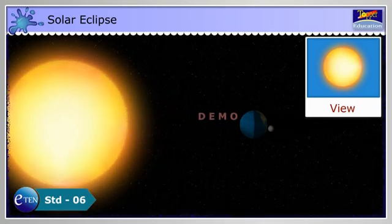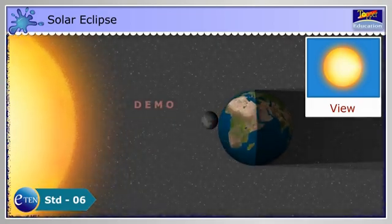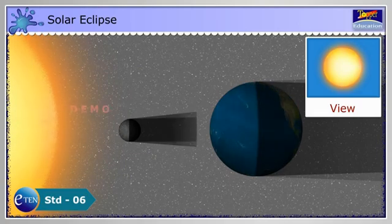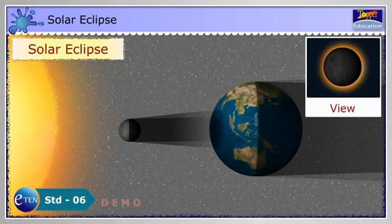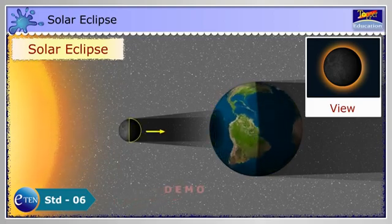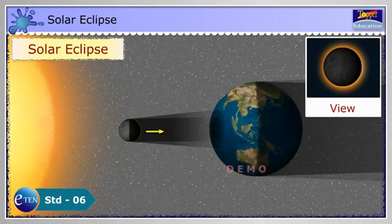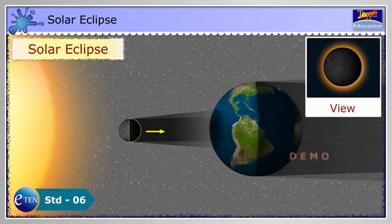In other words, the moon casts its shadow on the earth. This phenomenon is known as solar eclipse. During a solar eclipse, the dark side of the moon is towards us, which happens on a new moon day.